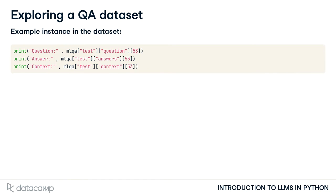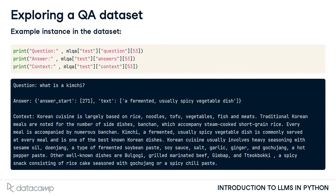Let's access these attributes for one instance in the test dataset. The answers attribute, when printed, shows a dictionary containing the answer's start position in the context and the extracted answer text.